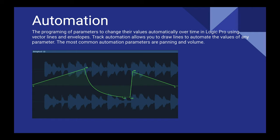It's rare that you would set volumes for a track and then never need to change them again throughout the entire song or soundscape. Imagine a situation where you have a vocalist and in the chorus you want the vocals to be louder than in the verse, or you want the electric guitar to be really loud in the bridge because it's the most important thing, but then you want it to back off in the verses when the vocals matter more. Automation allows you to make these changes in real time and set values that can change dynamically while your project is playing.